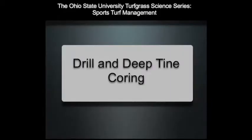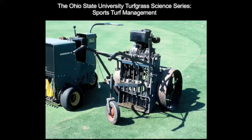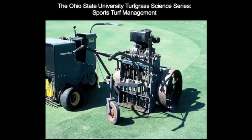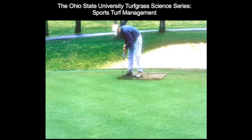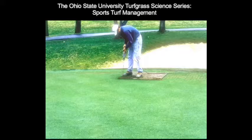In some situations, coring beyond the two and a half inch depth is desired. Drilling or deep tining are done for deeper soil penetration. This picture from the early 1960s shows a coring unit using tines that are drill type in nature. Deep drilling was initially done by hand with a drill and a long drill bit, and a piece of plywood acted as a template for drilling.